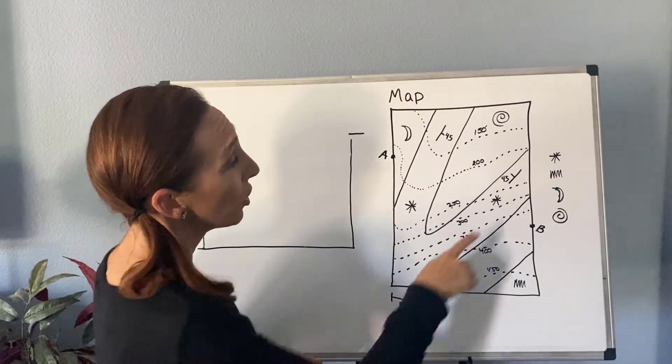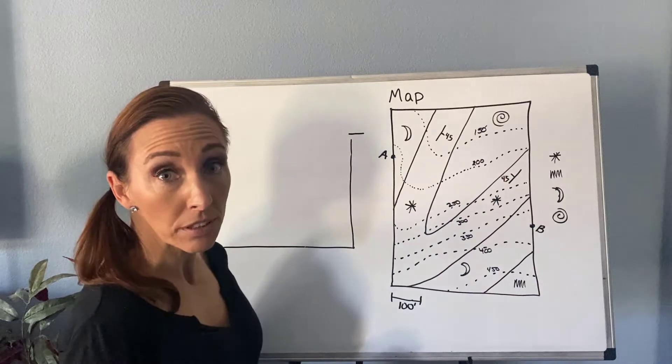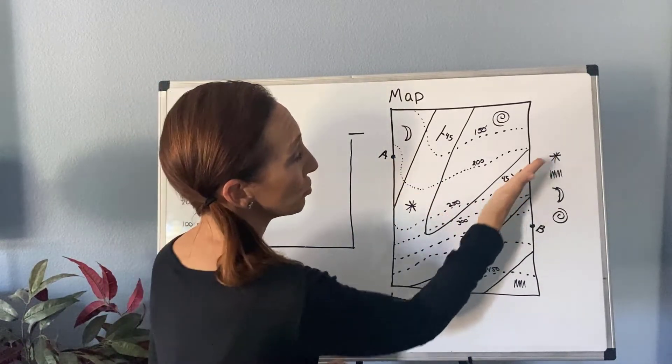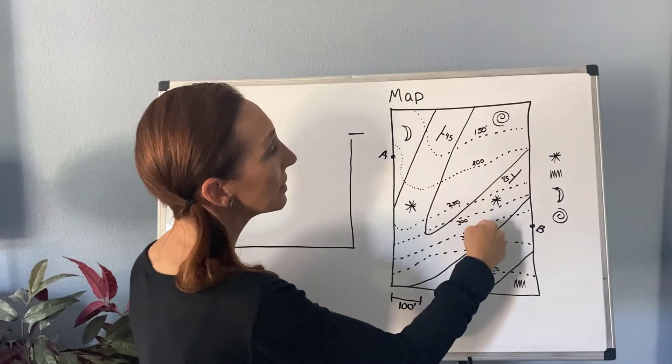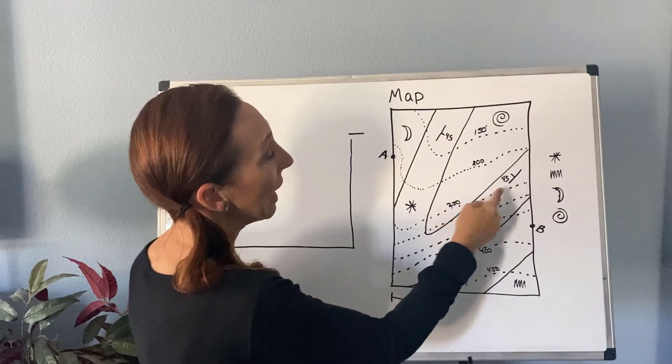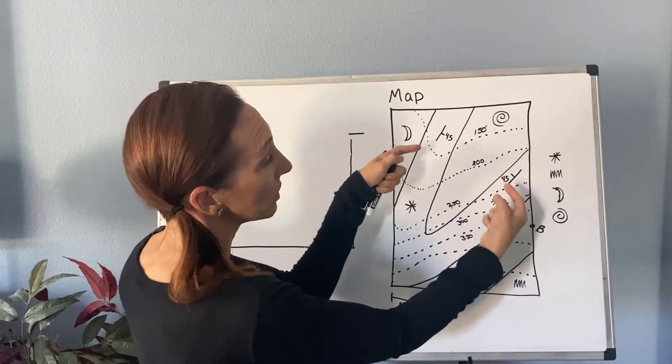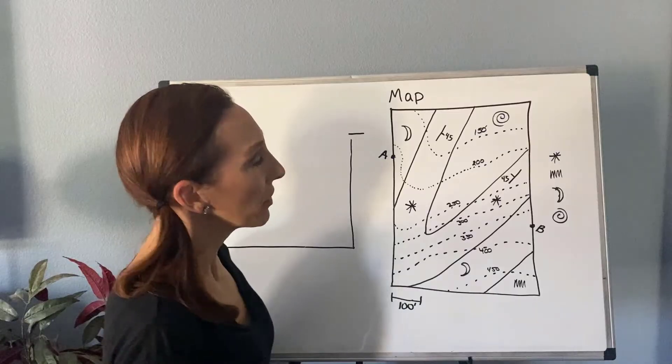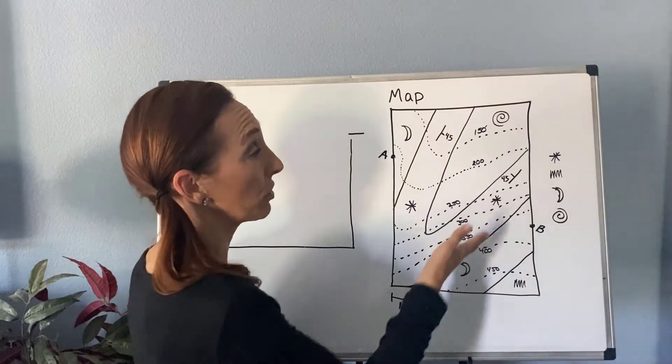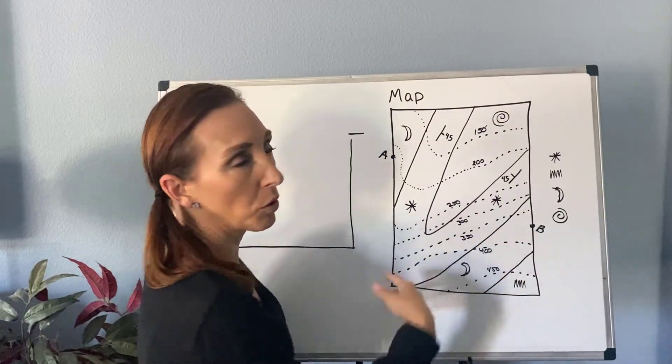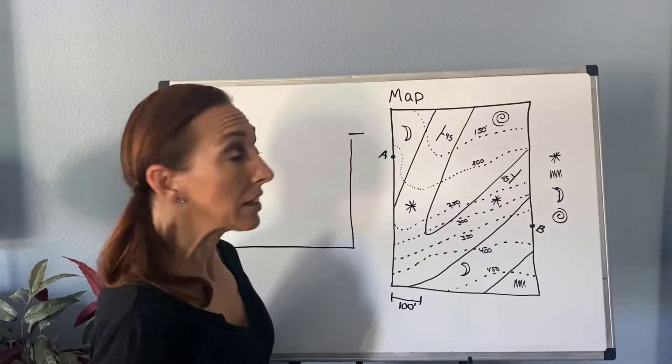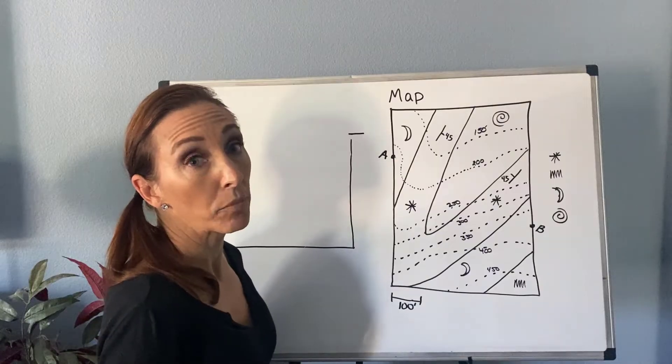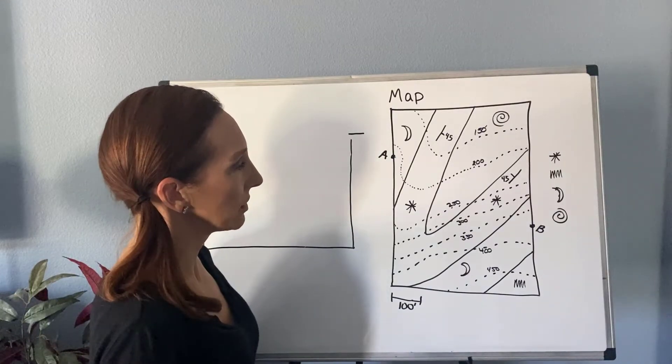We also see a couple other things. We see a couple strike and dip symbols here. So this asterisked unit is striking kind of northeast, southwest in both locations, and then the dip is going toward the center of whatever the structure is at a 45 degree angle. And the directions would probably say something like, assume all the beds in the lower right corner or the southeast corner are dipping just like the asterisk one there, and then the same thing about the northwest corner. So we're going to make that assumption as well.